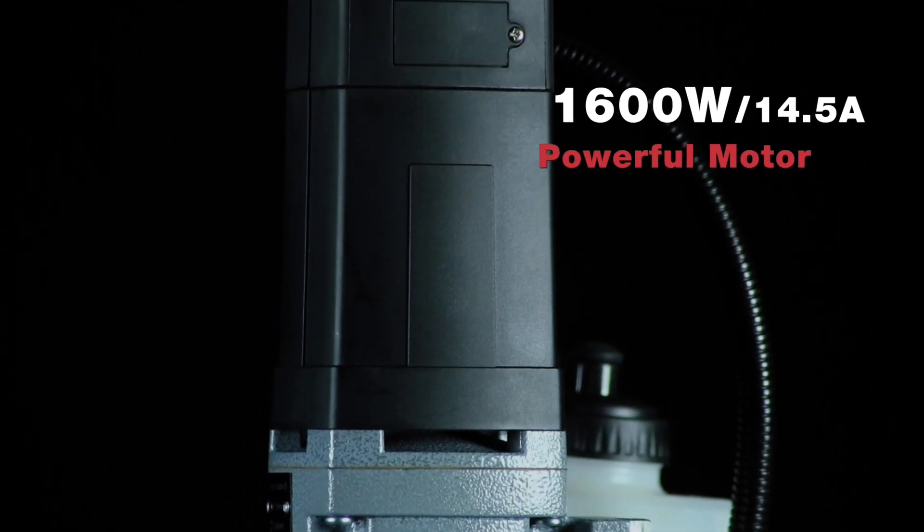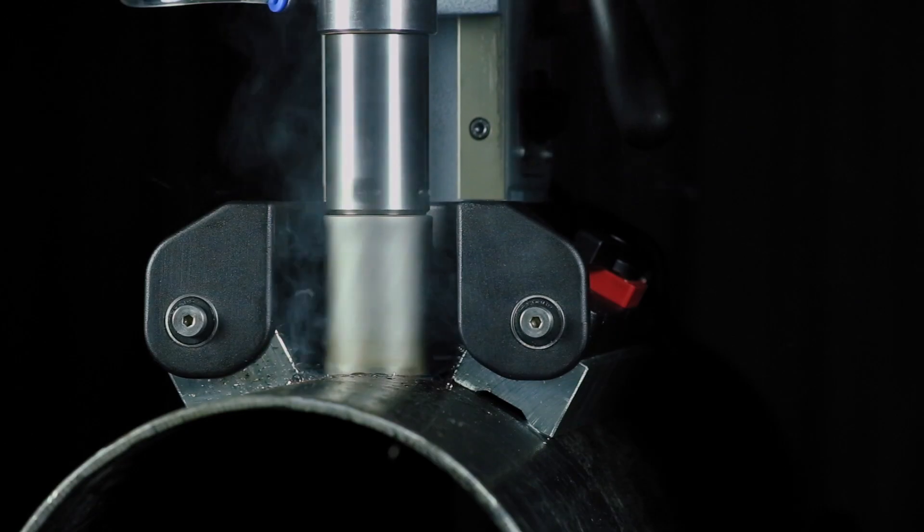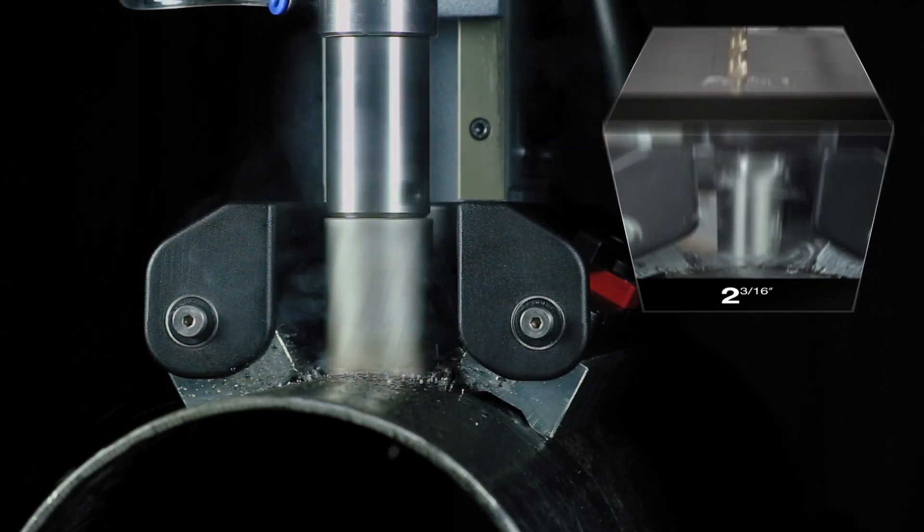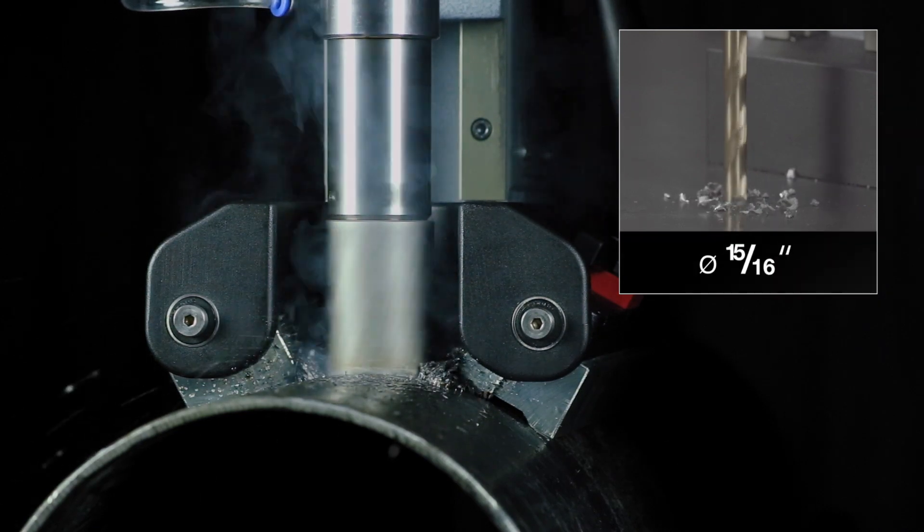Powerful motor of 1600 watts. Annular cutting up to 55 millimeter diameter. Twist drilling up to 23 millimeter diameter.